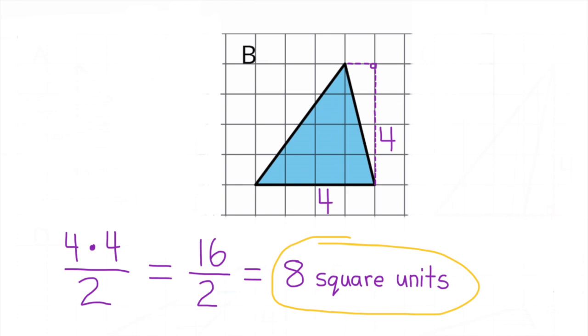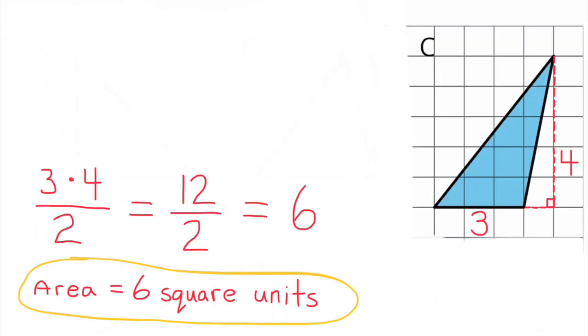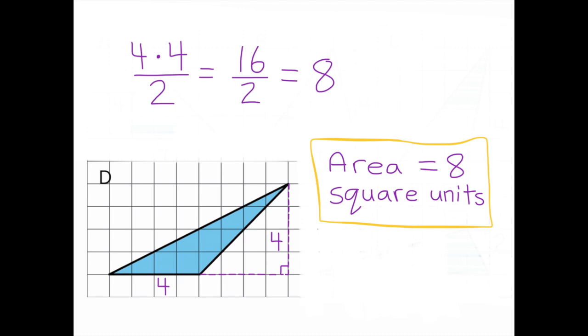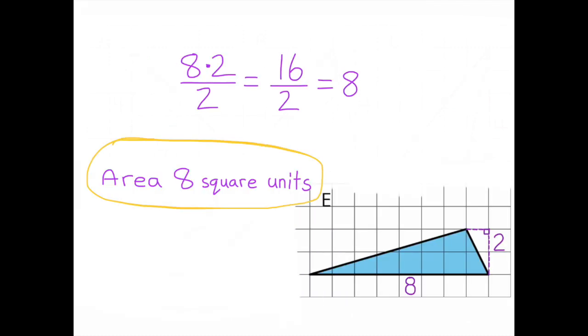Triangle B also has an area of 8 square units. Triangle C has an area of 6 square units. Triangle D has an area of 8 square units. And Triangle E has an area of 8 square units.